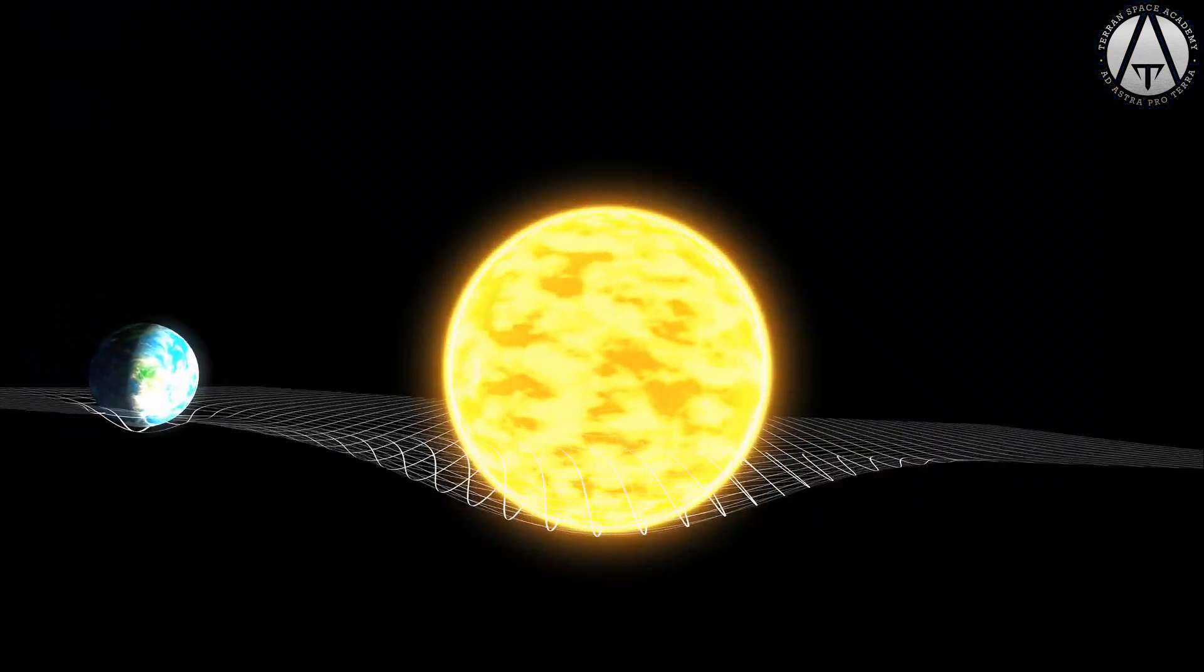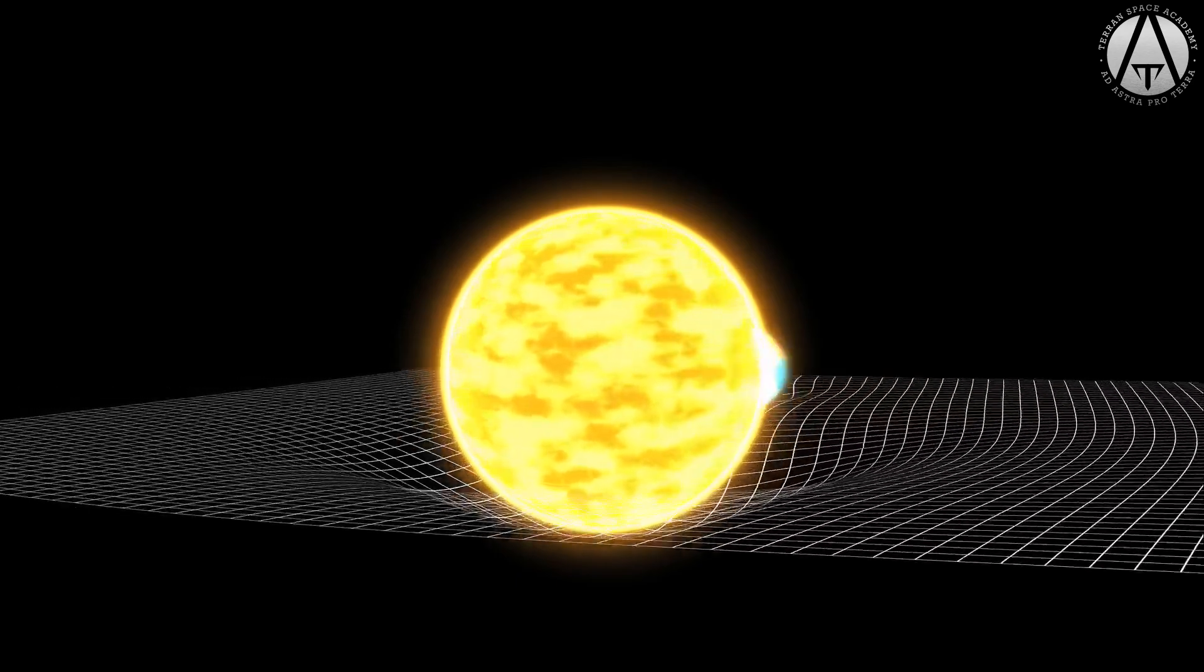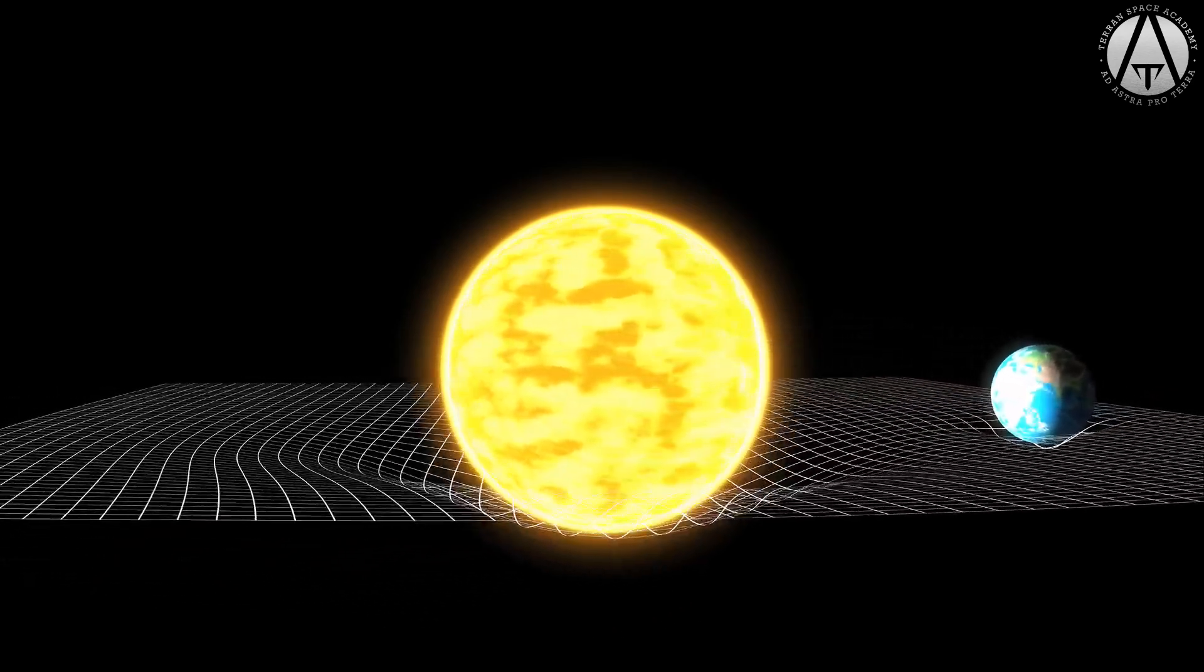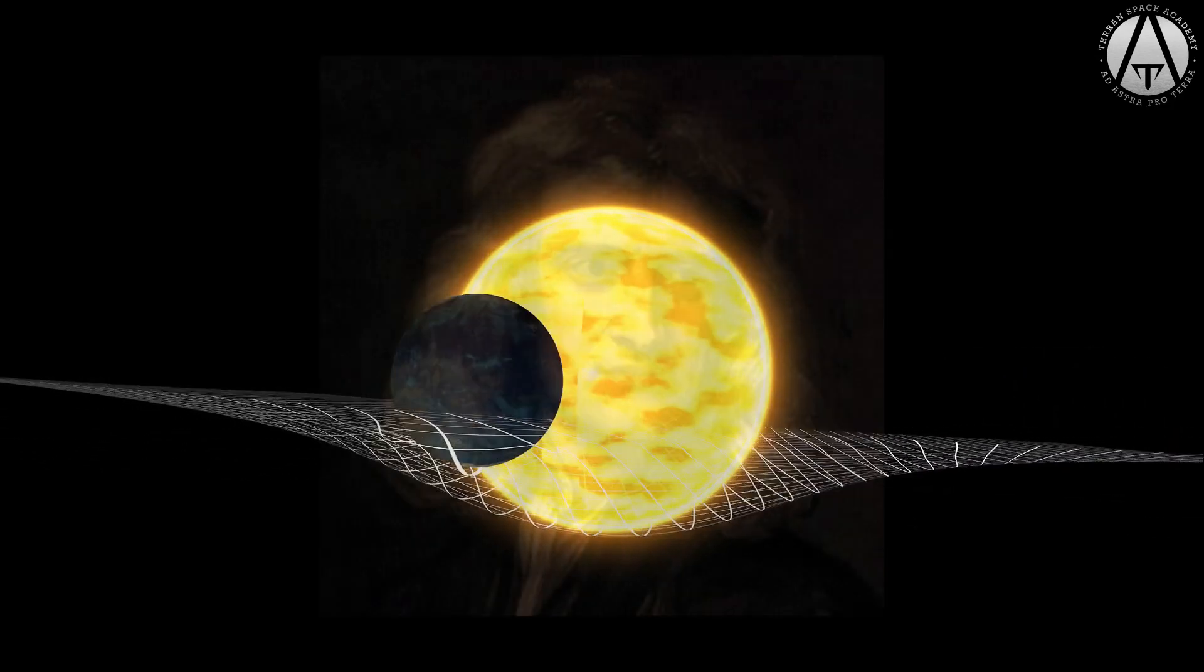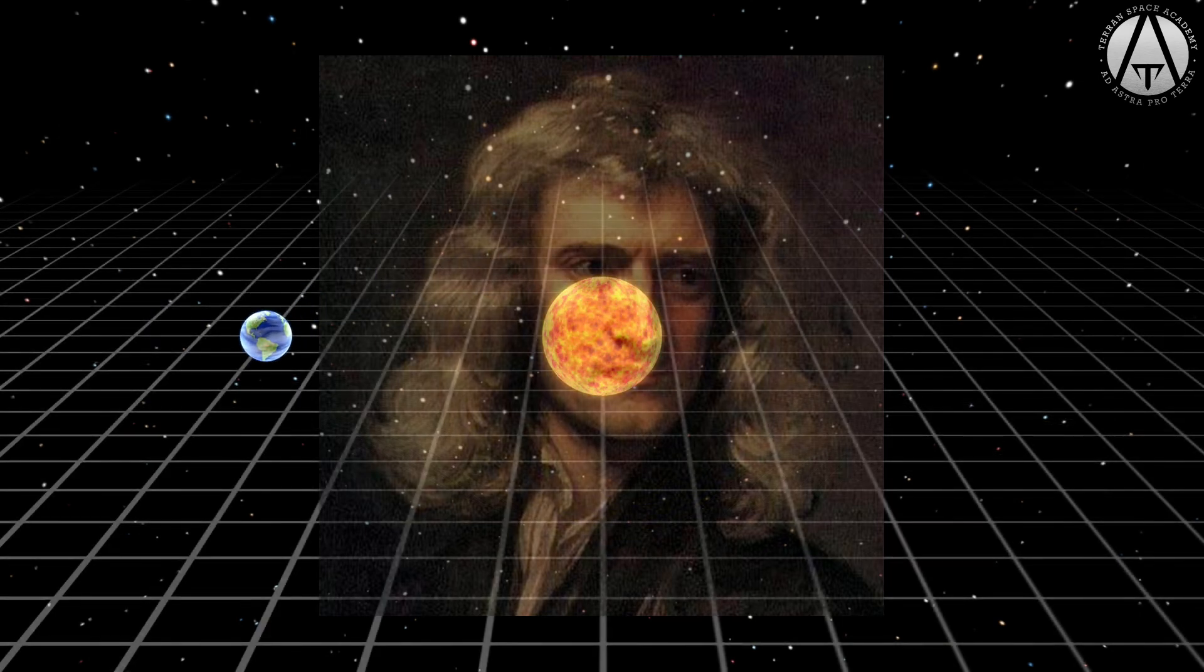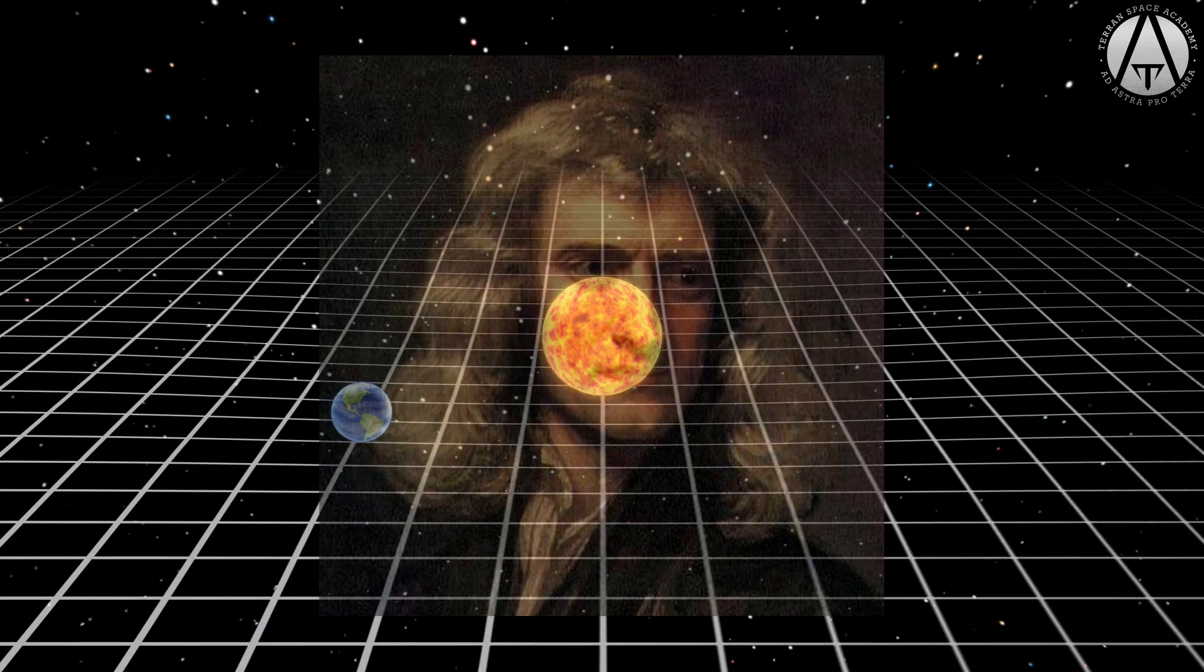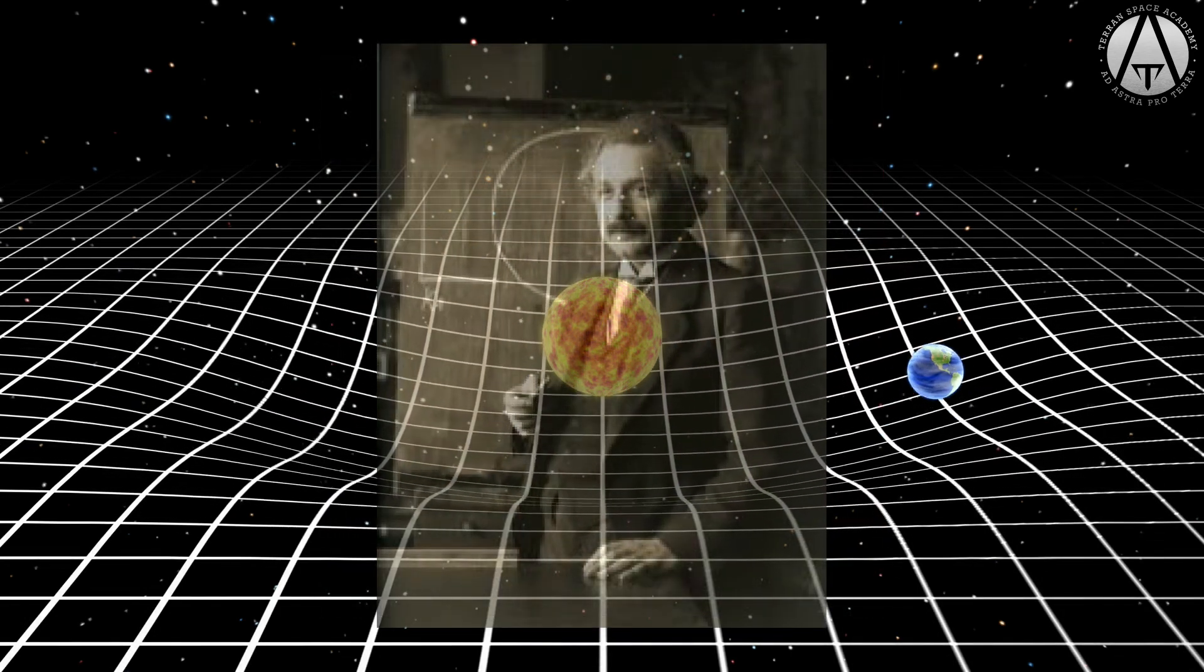But a larger mass, like that of an entire star or planet, creates a gravity well. We call the consequences of this distortion, gravity. Sir Isaac Newton thought that gravity was a force, instantaneously communicated between two masses. Einstein showed that gravity was in fact the effect a mass has on the space-time continuum, a distortion of the fabric of reality.